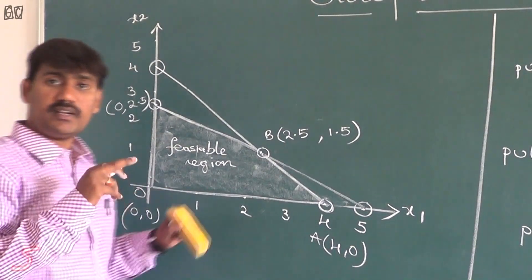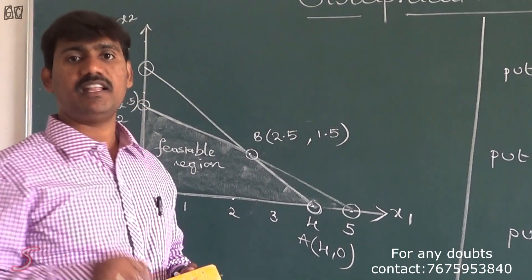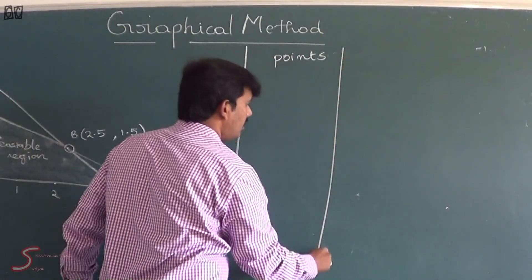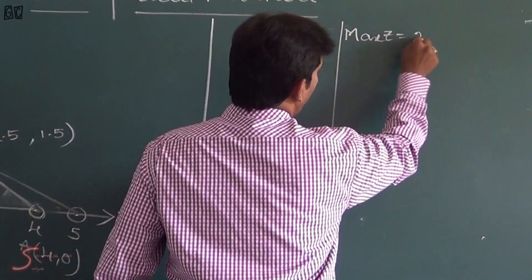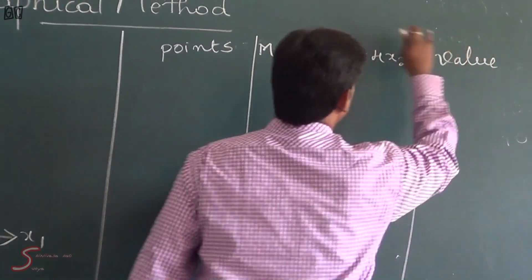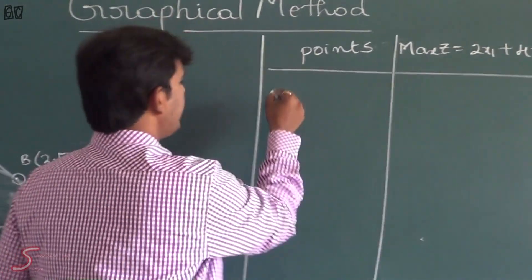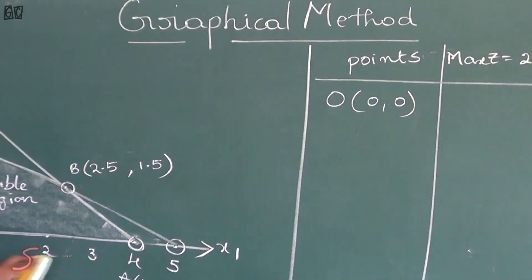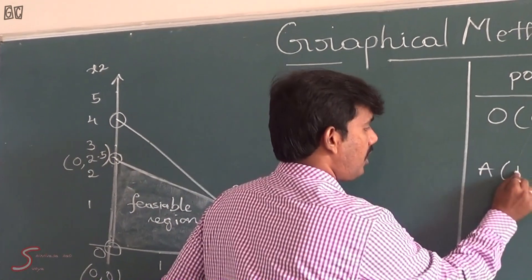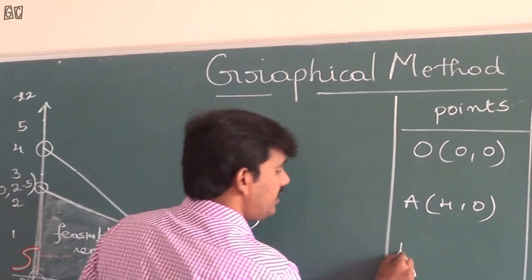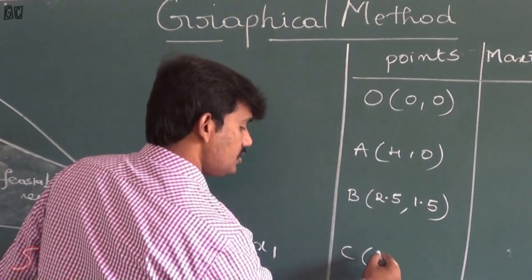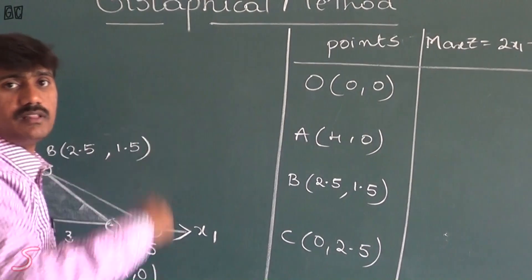Now we have to take a table and evaluate all the corner points to find the optimal solution. We have the objective function: maximize Z = 2x1 plus 4x2. The feasible region corner points are: Origin (0, 0); point A (4, 0); point B (2.5, 1.5); and point C (0, 2.5). I am going to substitute all the values in the objective function.